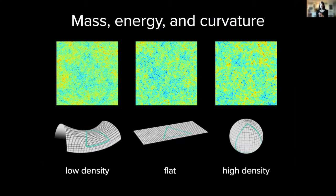And the result is that the apparent size of these spots that correspond to temperature variations in the cosmic microwave background depend on the curvature of the universe.